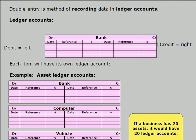The ledger account will also have some other information. It will always have the name of the ledger account at the top. It will have a date, a reference, and a dollar column on both sides of the ledger account. DR means debit — left hand side — and CR means credit — right hand side.